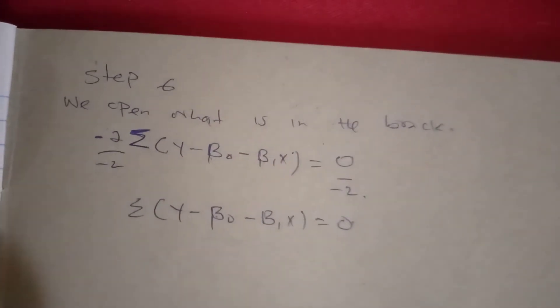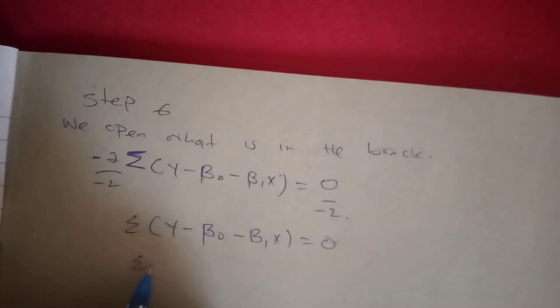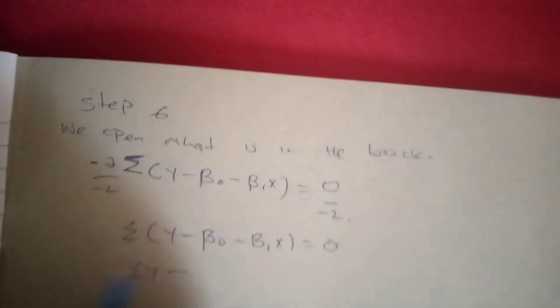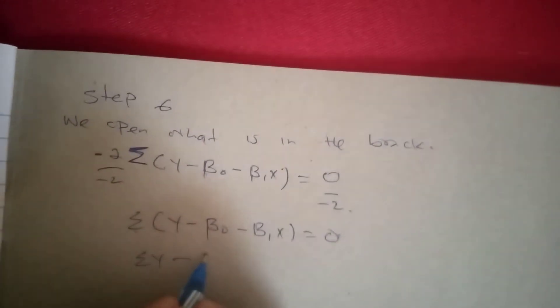Then we go to the next step, which is Step VI. We open what was in the bracket. If we are opening it, it will be summation of Y minus this summation equals zero.